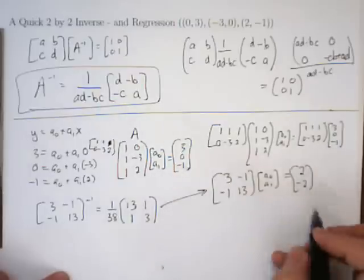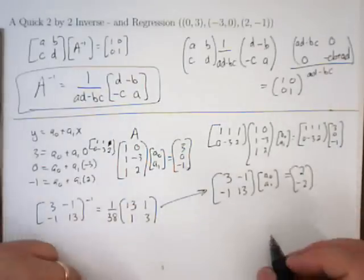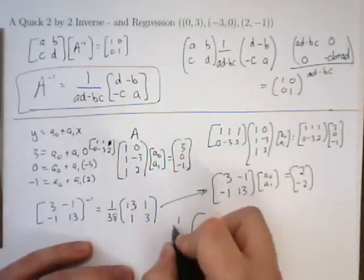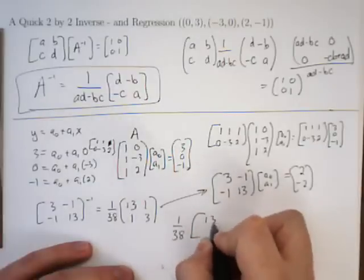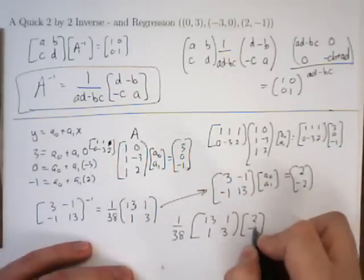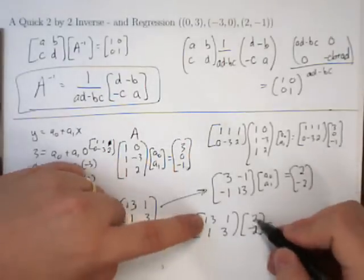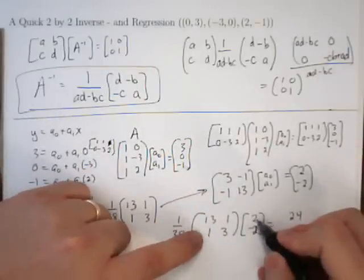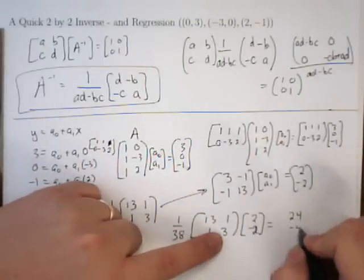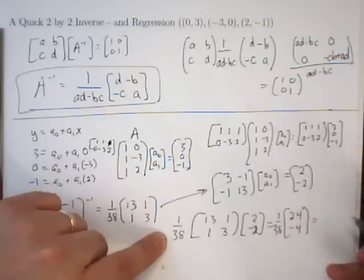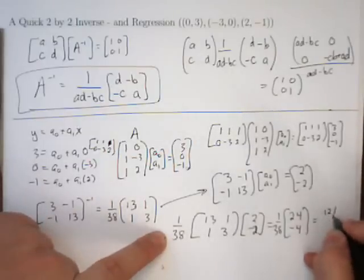So, now I'm going to multiply both sides. Actually, we're going to multiply this thing by the inverse. So, if I take the 1 over 38, the 13, 1, 1, 3, and multiply it by 2, negative 2. Outcomes, 26 minus 2 is 24. 2 minus 6 is negative 4. Don't forget the 1 over 38. And this simplifies to become 12 19ths and negative 2 19ths.